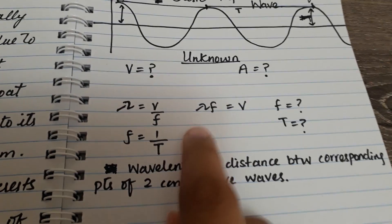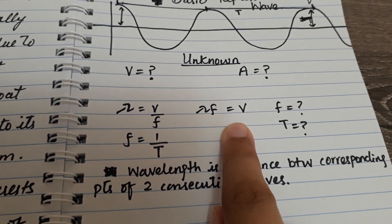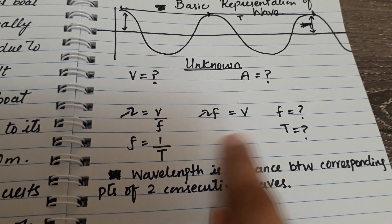The wavelength equals speed divided by frequency, which I can rearrange to find my speed.